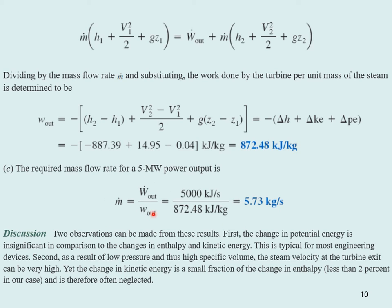Oftentimes students confuse what W dot and W are. Remember, W dot is a power. The power is equal to the mass flow rate times the work. Students kind of forget that, so you have to be careful with that. As he makes the observation, the change of potential energy and kinetic energy is insignificant. This is typical for most engineering devices.